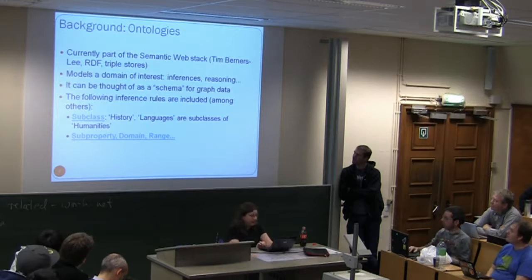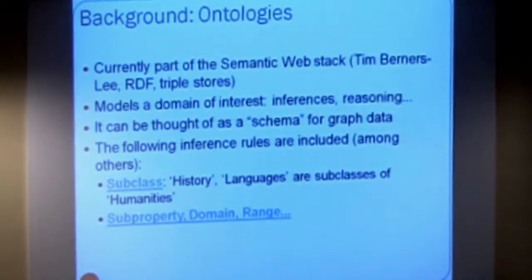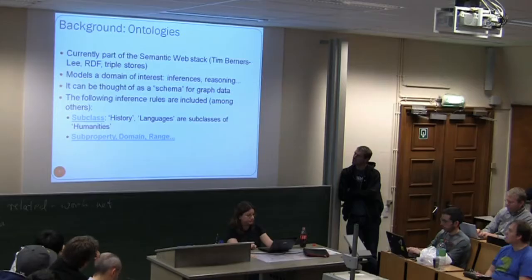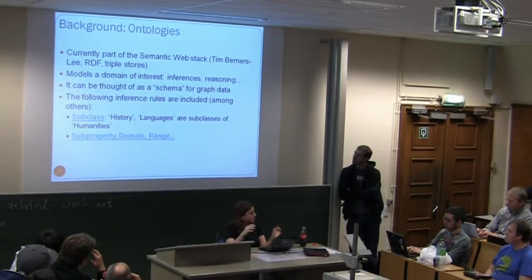A quick background on ontologies: this is part of the semantic web stack. A brief summary - it's a model of a domain of interest. It includes inferencing and reasoning, which is very interesting for intelligent applications. The speaker is including some of this in her graph query language, focusing on the subclass construct - for example, history and languages can be subclasses of humanities as a superclass.